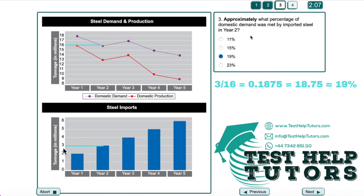So this question is asking us what is 3 over 16 as a percentage? To work this out we simply have to do 3 divided by 16 which is 0.1875, and this as a percentage is 18.75 which is roughly equal to 19%. So our answer is 19%.